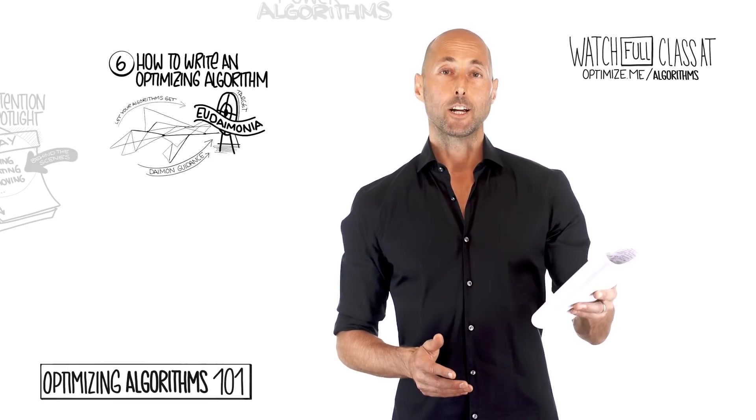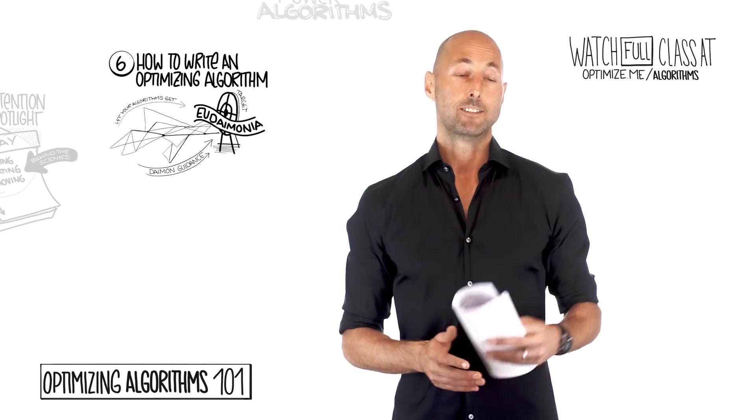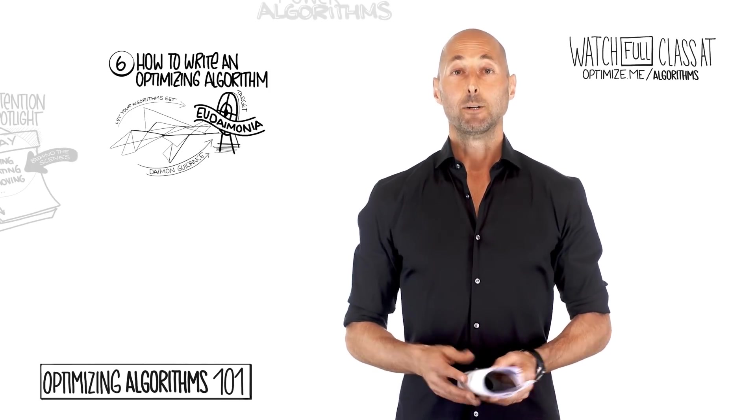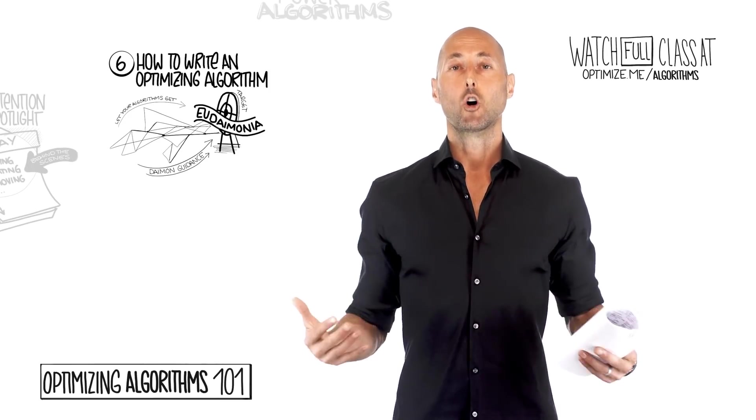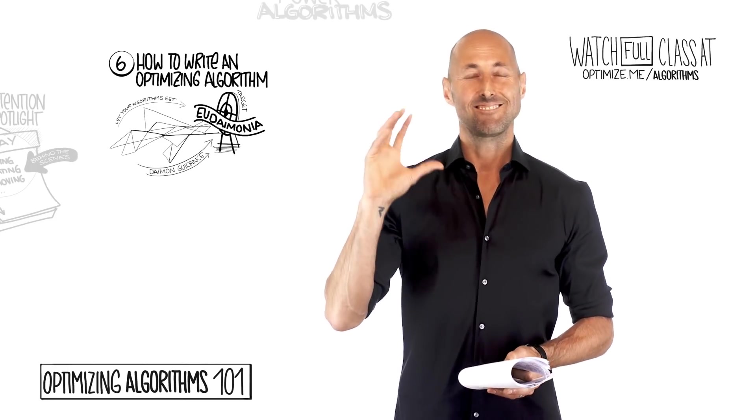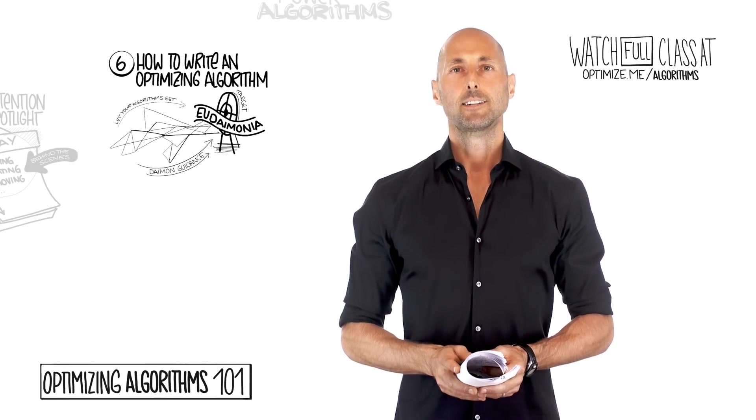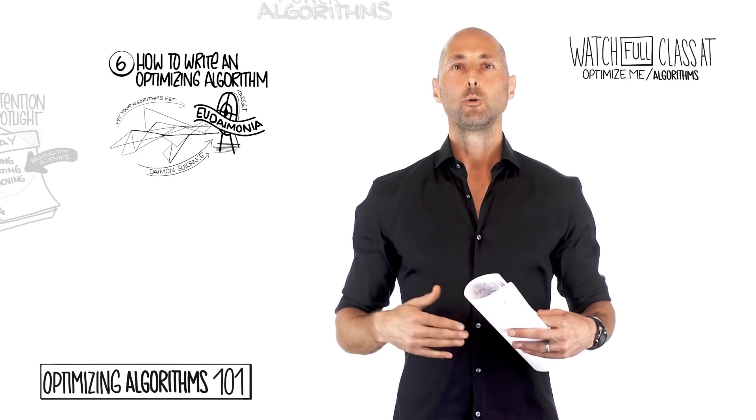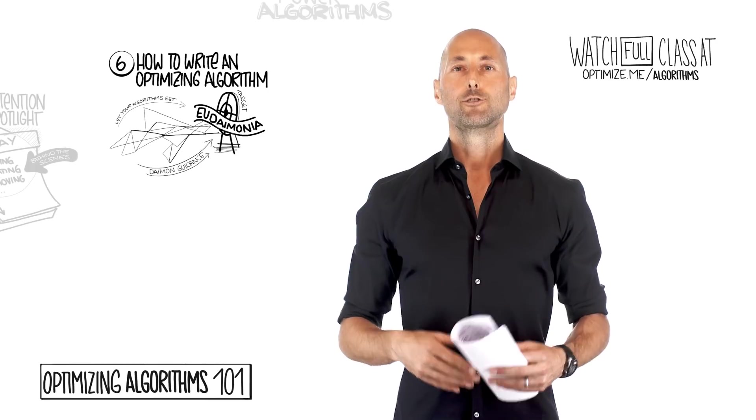You need to have a target. A Tesla has a target. Drive safely to a destination. Let's have an autonomous car. What's your target? I'm going to suggest that your ultimate target should be happiness, but not in the shallow sense of happiness we take it these days. In the deepest sense, eudaimonia.